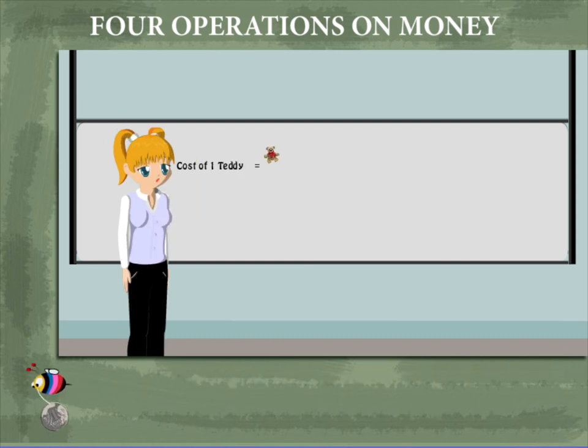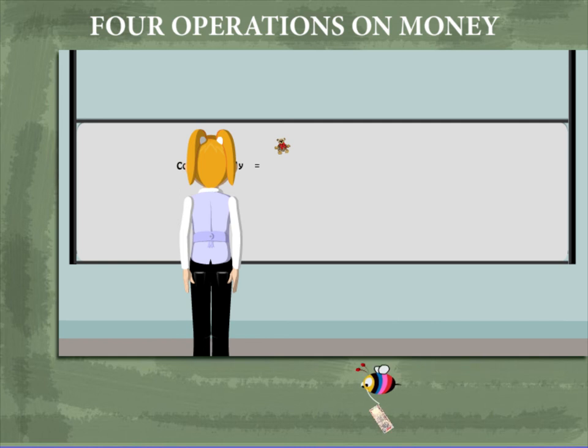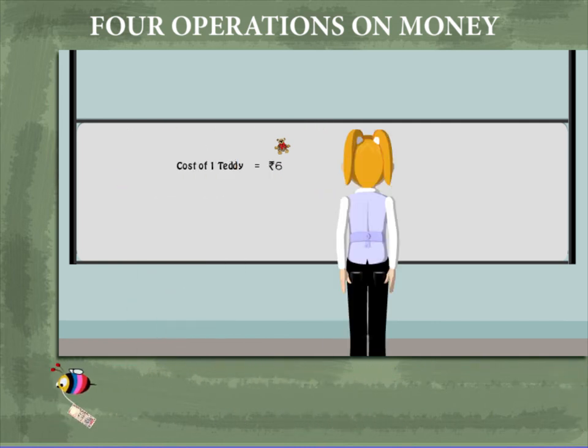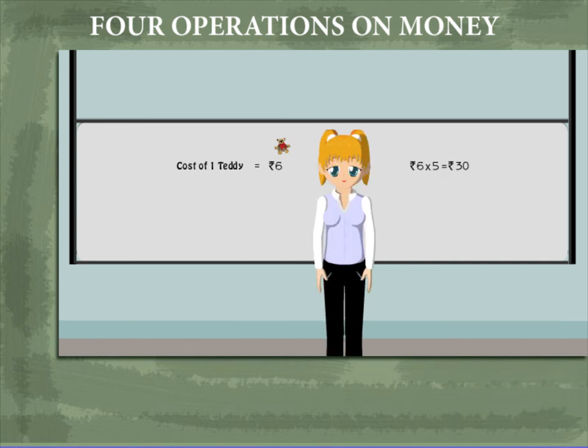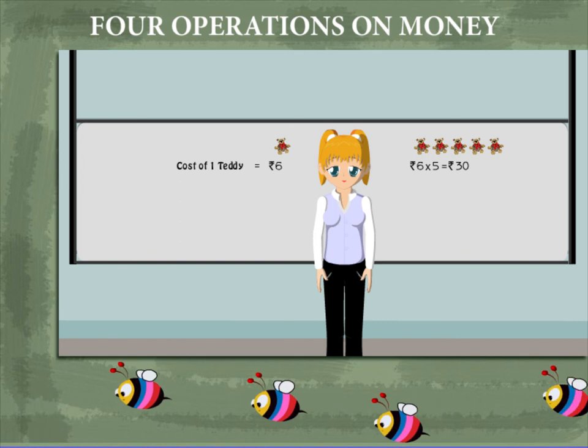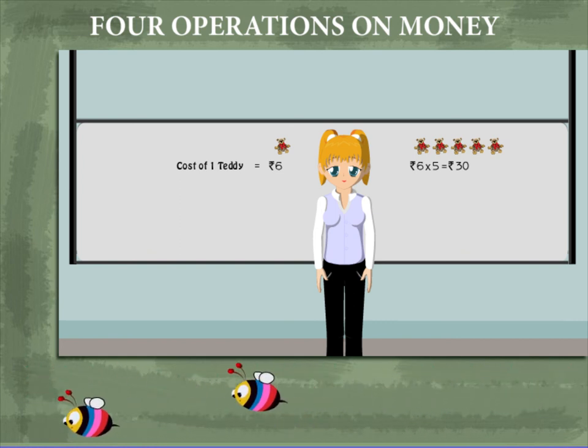Another question on the board: Cost of 1 teddy bear is rupees 6. What is the cost of 5 teddy bears? Nancy ma'am multiplies rupees 6 by 5. 6 fives are 30. So, the cost of 5 teddy bears will be rupees 30. That was easy.